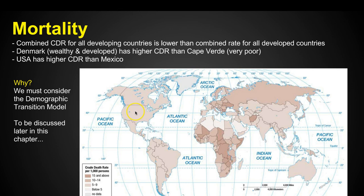Similarly, the USA has a higher death rate than Mexico. To understand more about why, we're going to dig into the demographic transition model, which will be discussed later in the chapter in the next key issue.